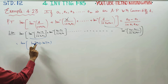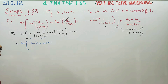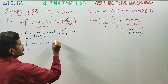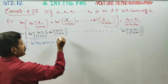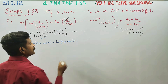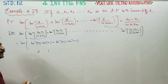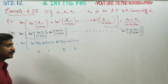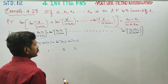Using the formula: tan inverse x minus tan inverse y equals tan inverse of (x minus y) over (1 plus xy). Applying this formula to each term in the sum.